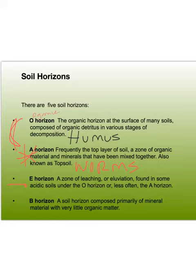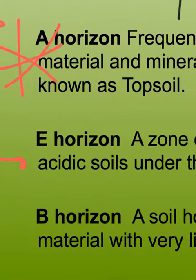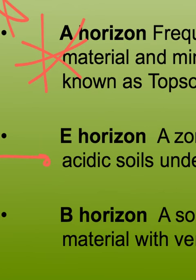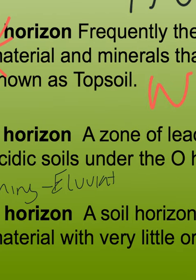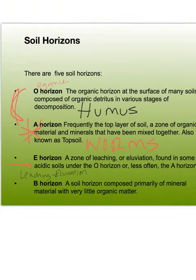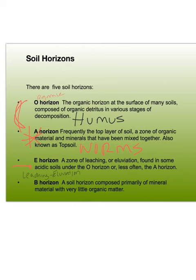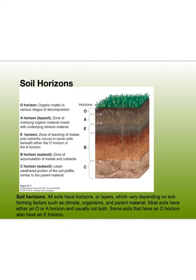The E-horizon is not always present. The E stands for eluviation — also called alluviation — meaning these layers are leaching their acids and materials into lower layers. The B-horizon contains mineral material with very little organic matter, so it's going to be much more similar to the parent material.